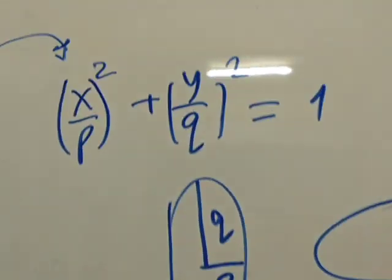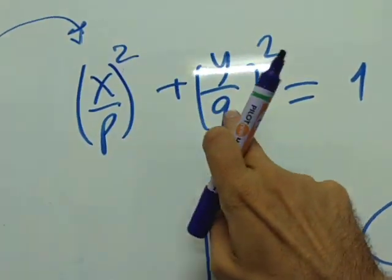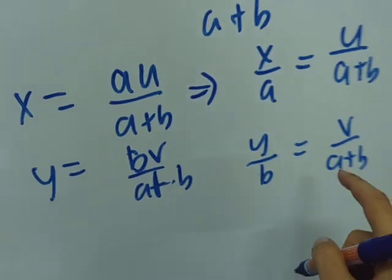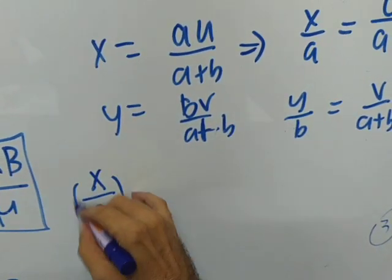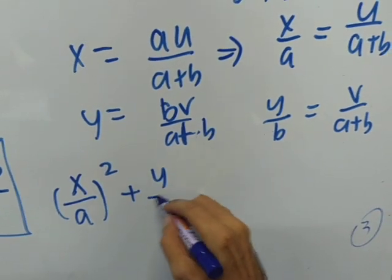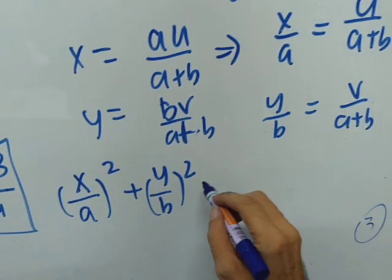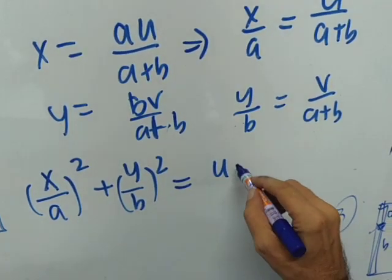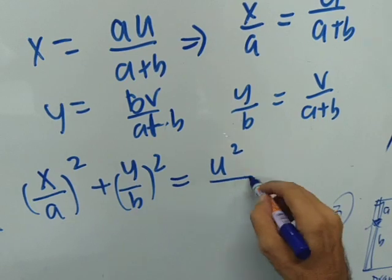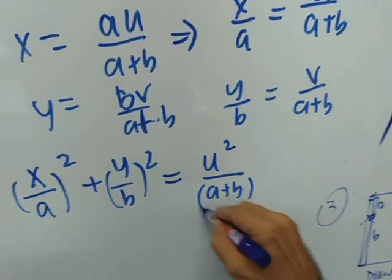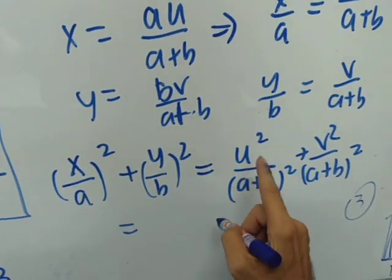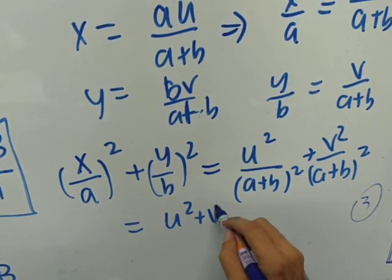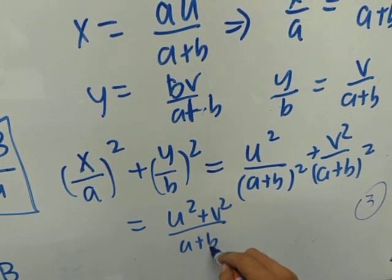Now, let's use some intuition. Square both of those things and let's see what happens. We'll square both of these. So I have x over A all squared plus y over B all squared. We square them, we add them together. We get U squared over A plus B all squared plus V squared over A plus B all squared. And that's equal to U squared plus V squared over A plus B all squared.